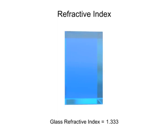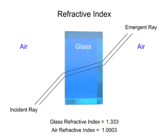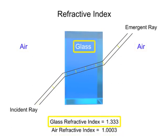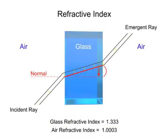The refractive index of air is 1.0003. Anytime a light beam travels from a medium with a low index of refraction like air to a medium with a higher index of refraction like glass, the beam of light will bend toward the normal.